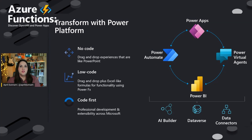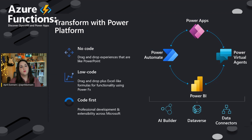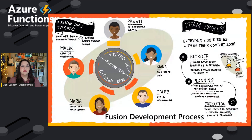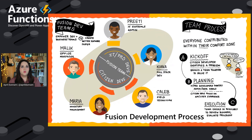We talked about this huge need for application development and how low code technology and the Power Platform can really help us bridge that. In essence, what the Power Platform does is make low code transformation a team sport — because it can handle no code, low code, and code-first scenarios. That concept has a name and we call it fusion development.